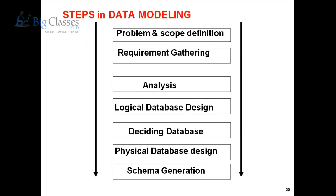We will also discuss the different steps involved in data modelling. When implementing any data warehouse for banking, healthcare, insurance, or other businesses, there must be a model — similar to how you need a blueprint or architectural plan to construct a building. The data modelling steps include: problem and scope definition, requirement gathering phase, analysis phase, analogical database design phase, deciding the database and physical database design, and finally schema generation. These are the different steps involved in general data modelling.